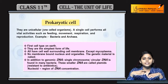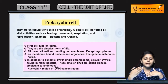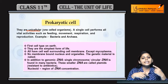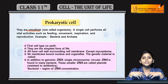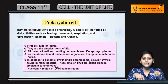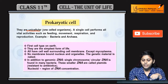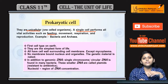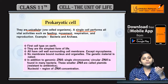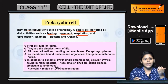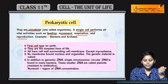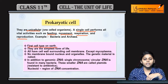Prokaryotic cell की बात करते हैं. Prokaryotic cells mainly unicellular होते हैं, means एक ही cell सारे functions खुद करता है. Single cell perform करता है सारे functions जैसे feeding, movement, respiration and reproduction. Prokaryotic cell is the first cell type on earth.